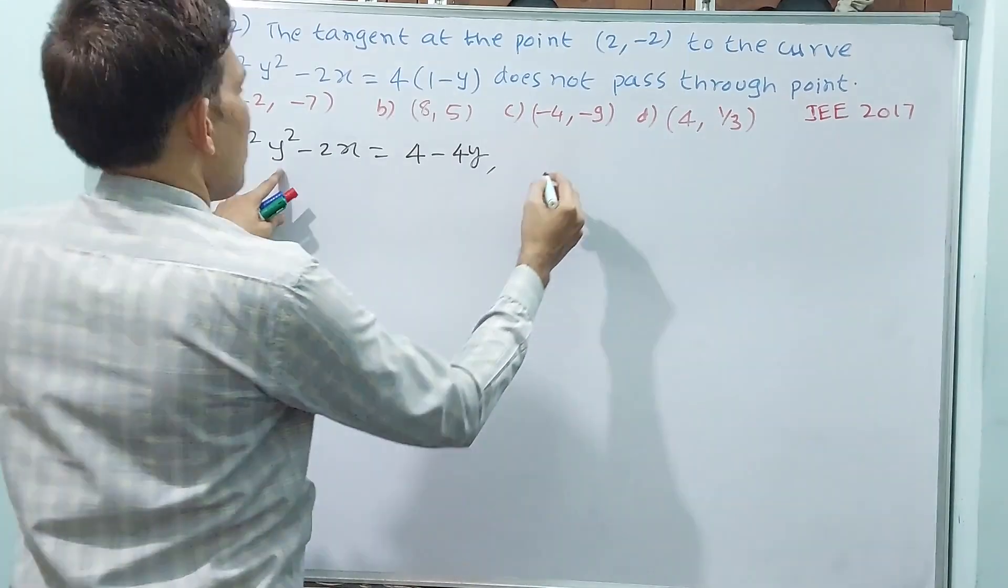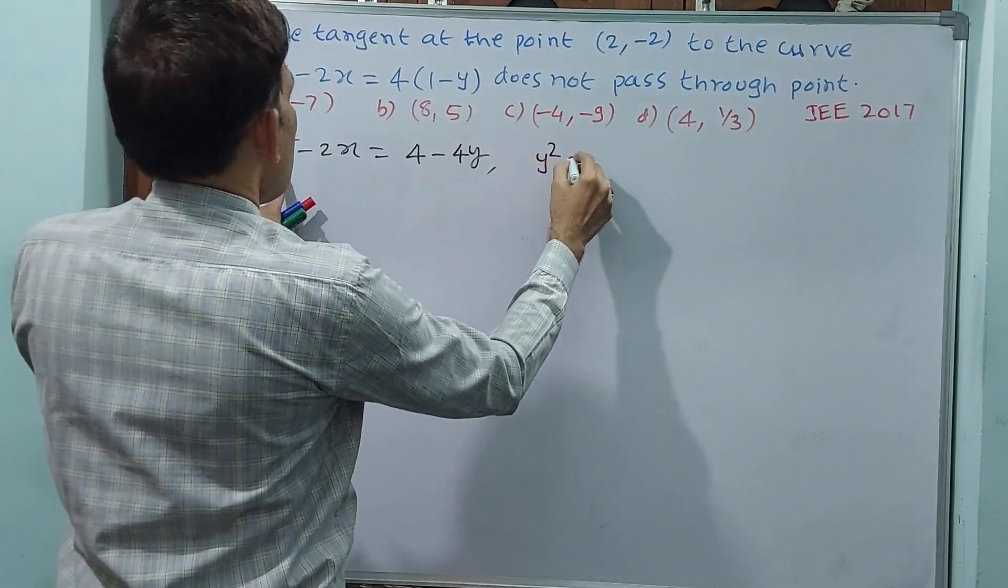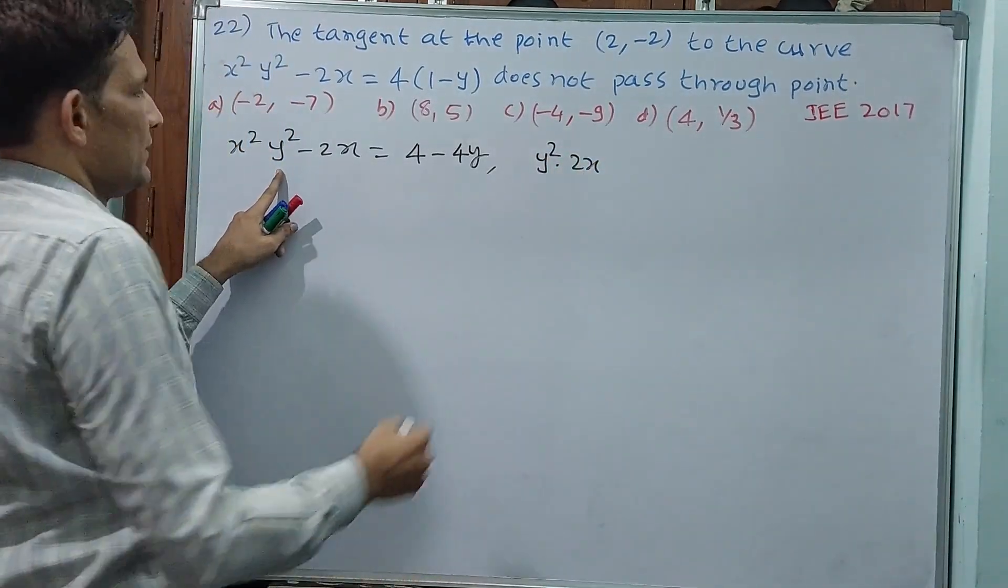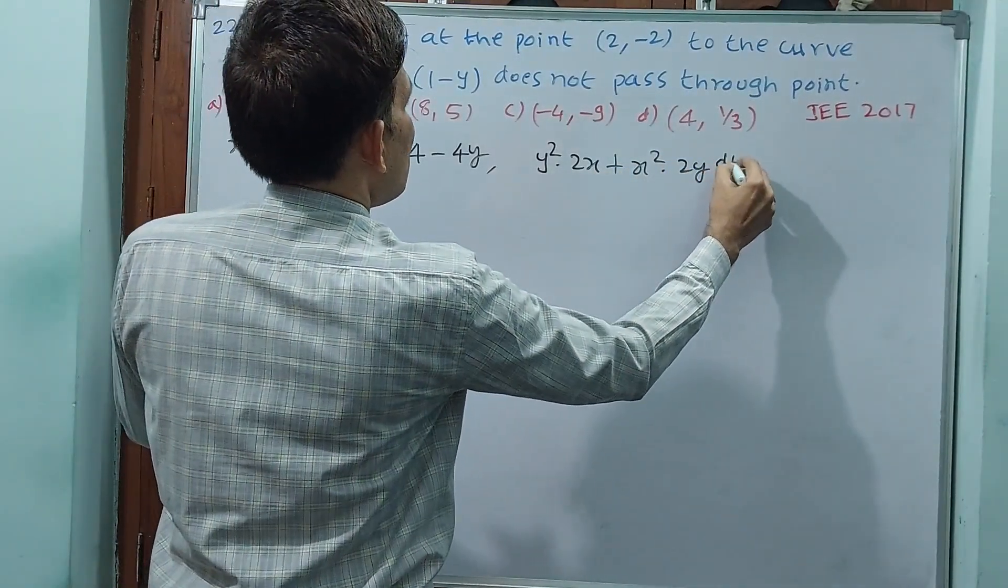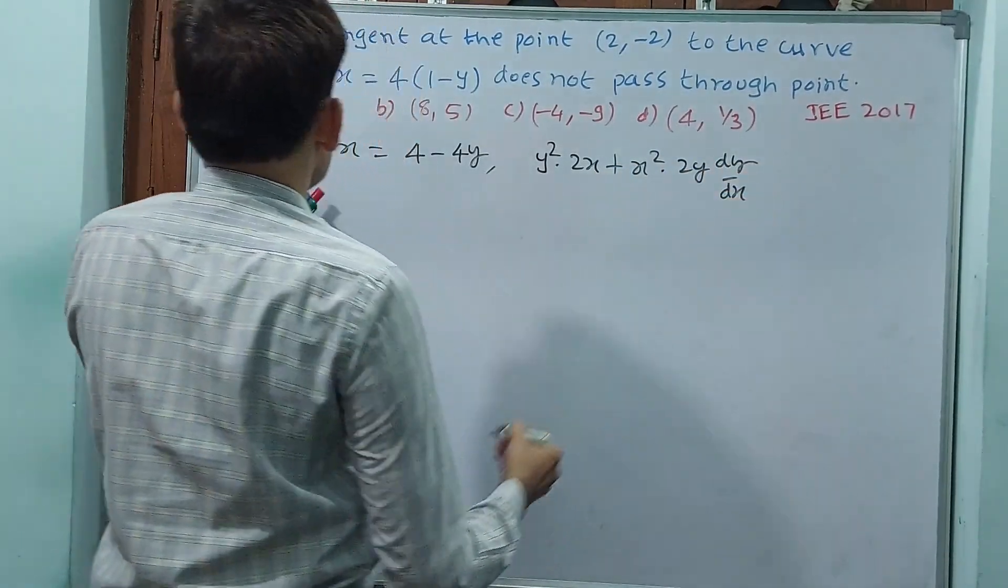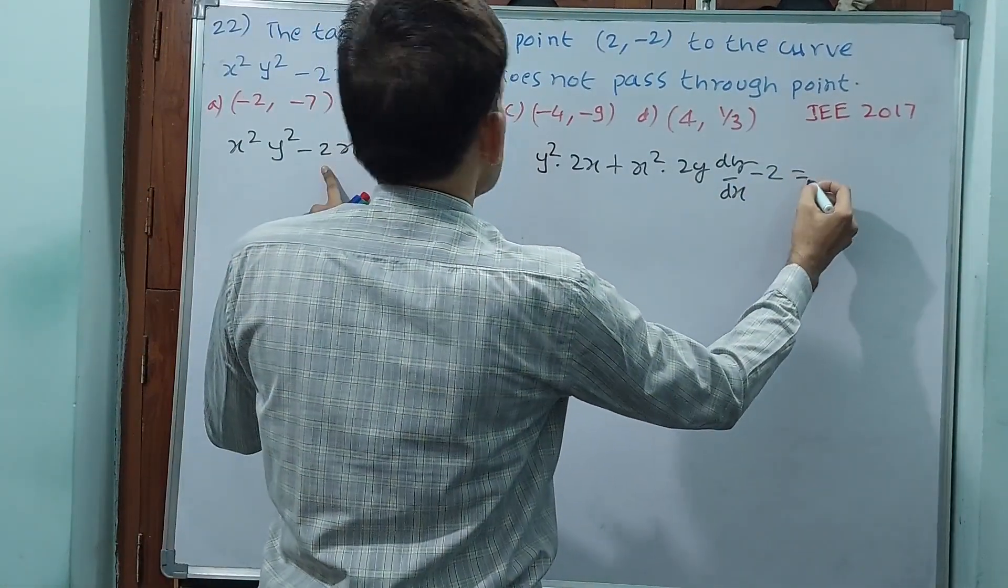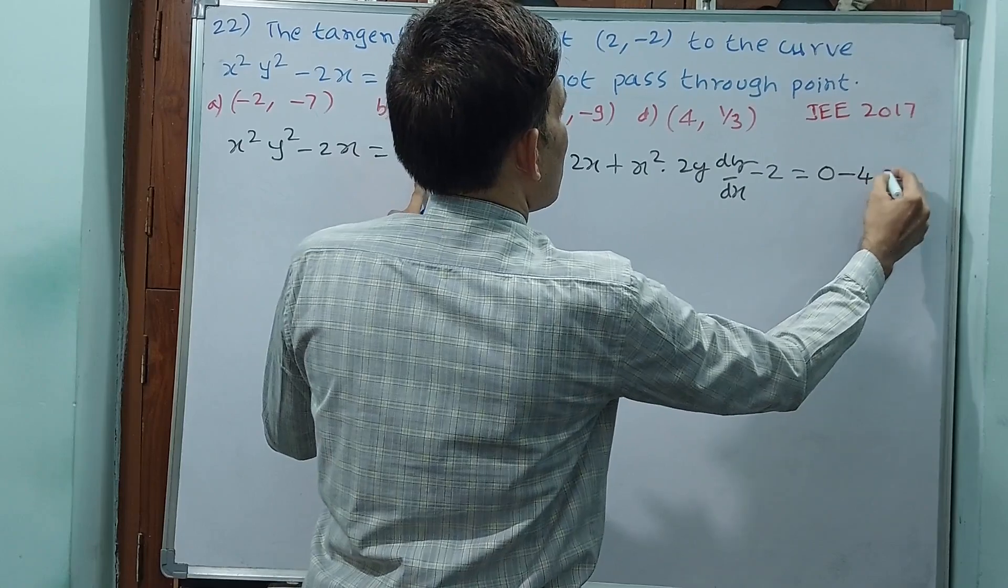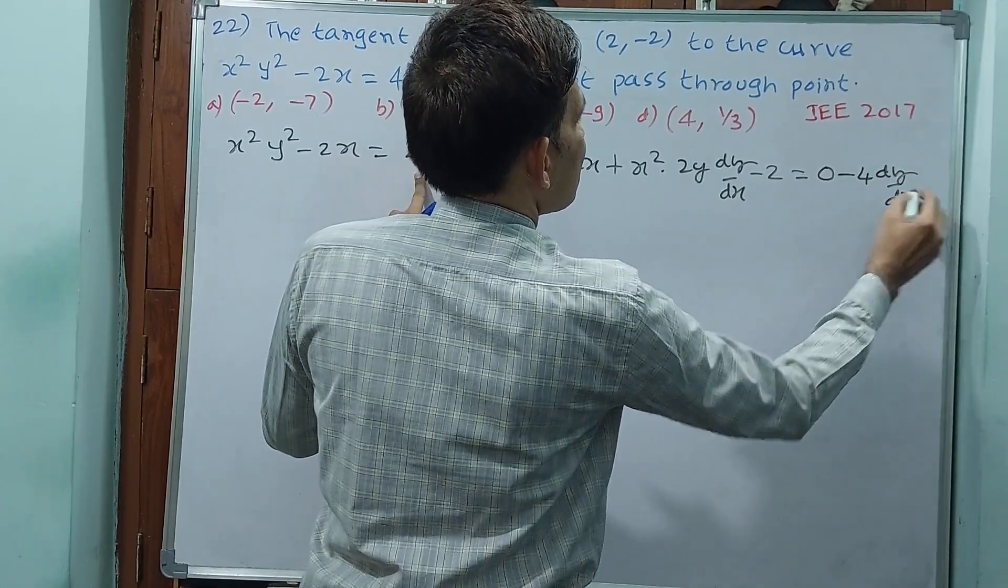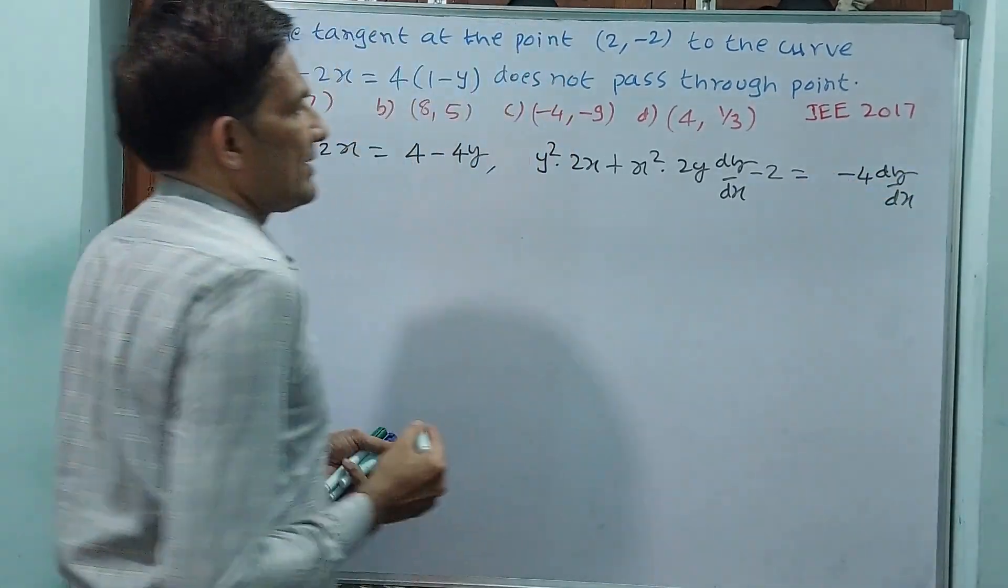Now, differentiation if I do, y² · 2x + x² · 2y(dy/dx) - 2 = 0 - 4(dy/dx). I think 0 I need not write.